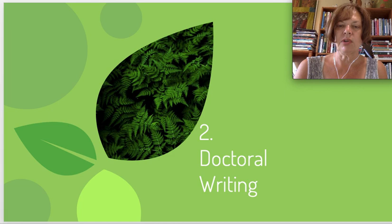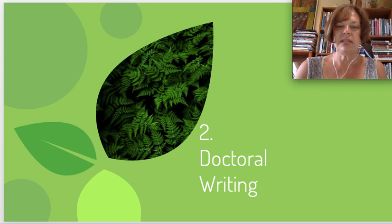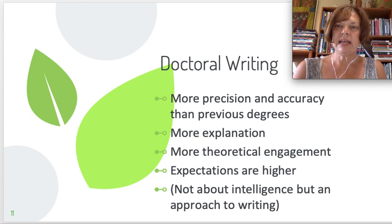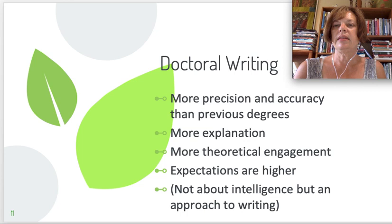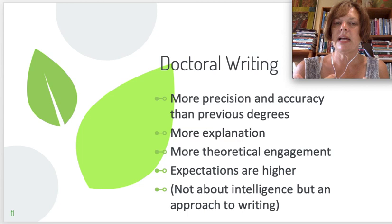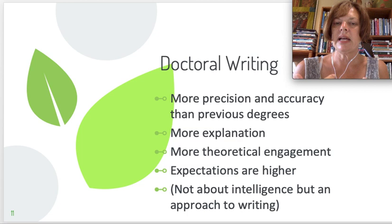At the doctoral level you have to be more precise and more accurate than in previous degrees. Your readers will question you if you don't have that. You'll need to provide more explanation on concepts and terms than at master's level. There's more theoretical engagement expected — you're expected to engage with theory and with some kind of perspective. The expectations are higher, but it's not about intelligence. What you need is an approach to writing that's open and flexible, able to adjust to these higher and different expectations.